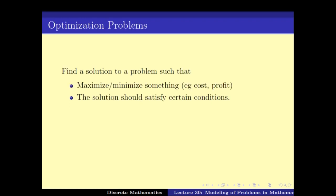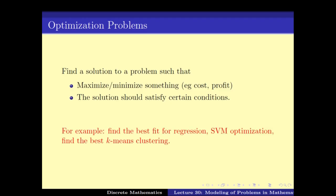In the last video, we looked at a particular problem which was an optimization problem. An optimization problem is something where you minimize or maximize something like a cost or a profit under a certain set of conditions. This kind of problem arises a lot in real life, in industry, and in the area of big data. We have picked up four such optimization problems and we will see how these can be modeled in the language of linear programming and graph theory to help us solve them.